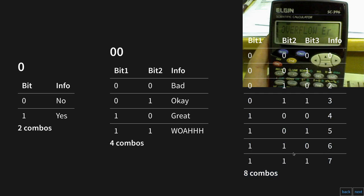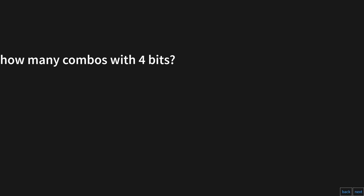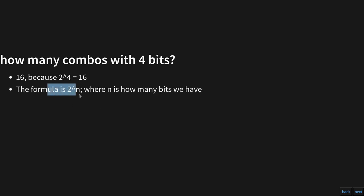Can you guess how many unique patterns we can make with four bits? The formula for finding the maximum number of unique patterns is 2 to the n power, where n is the number of bits. For four bits, that's 2 to the 4th power, which equals 16.